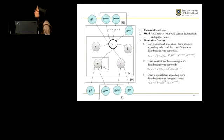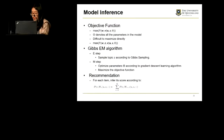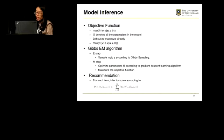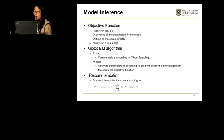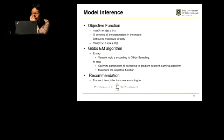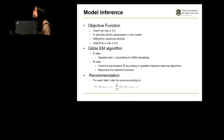Based on this model, we can learn all the related parameters. Our objective function is the probability of the content information and the spatial items given all the parameters. However, it's very difficult to maximize directly, which is why we introduce the latent topic Z and adopt the GPS-EM algorithm to infer the parameters. In the E-step, we sample the topic according to the GPS sampling method. In the M-step, we optimize all the parameters according to gradient descent learning methods.